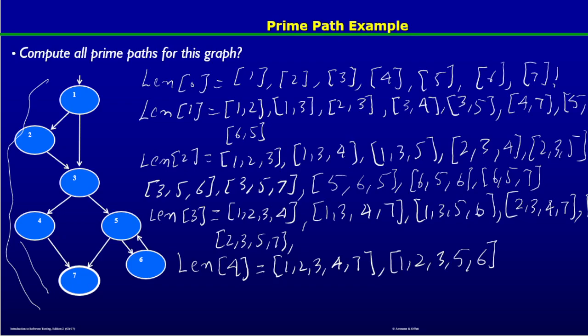Now I will strike out the paths which are sub-paths of other paths. Node 1 appears in several larger paths, as do nodes 2, 3, 4, and 5. The idea is that a prime path is a simple path that does not appear as a simple sub-path of any other simple path. So paths like [1,2], [1,3], [2,3], [3,4], [3,5], [4,7], [5,6], and [5,7] are all sub-paths and can be discarded.